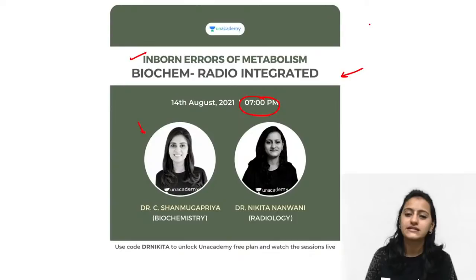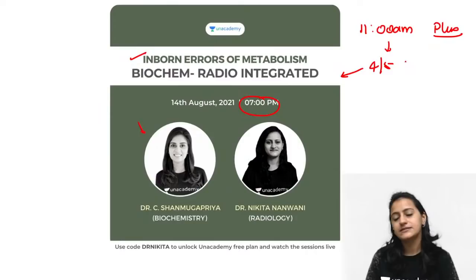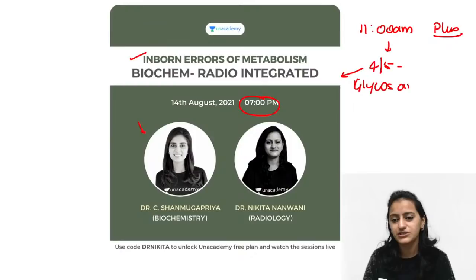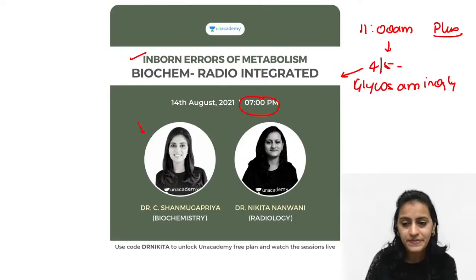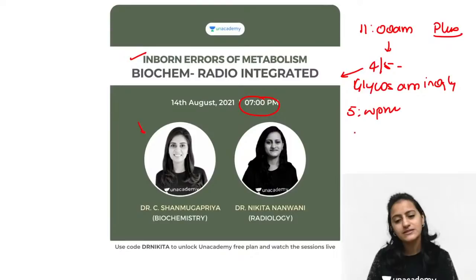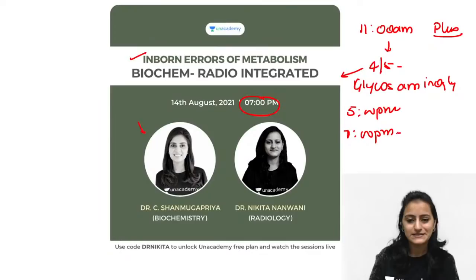So remember the plan for today: this 11 a.m. session is for plus subscribers — the fourth class of five this month. We will continue with biochemistry, specifically glycosaminoglycans, the mnemonics and cheat codes to remember chondroitin, keratin, dermatan, and the remaining part of yesterday's class. Then 5 p.m. continues with opioids MCQs and flashcards, and 7 p.m. is your radiology-biochemistry integrated session.